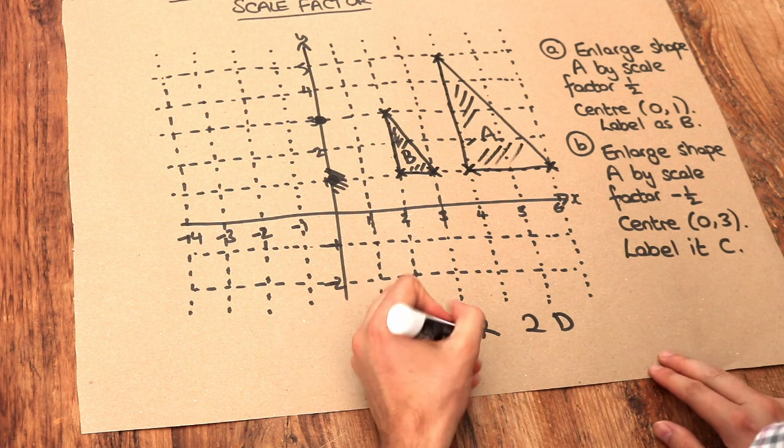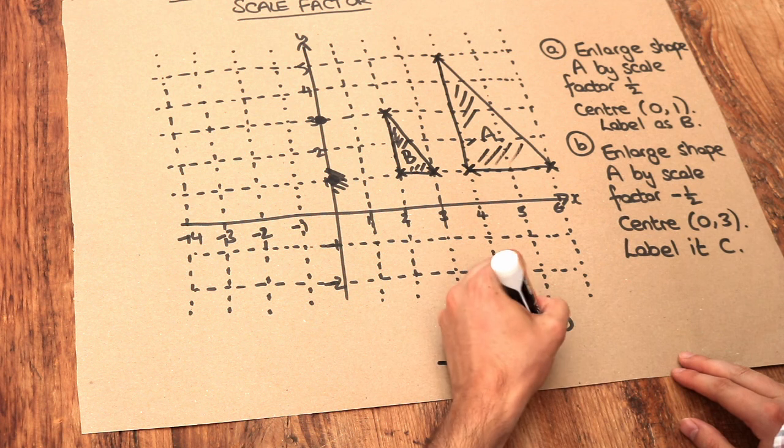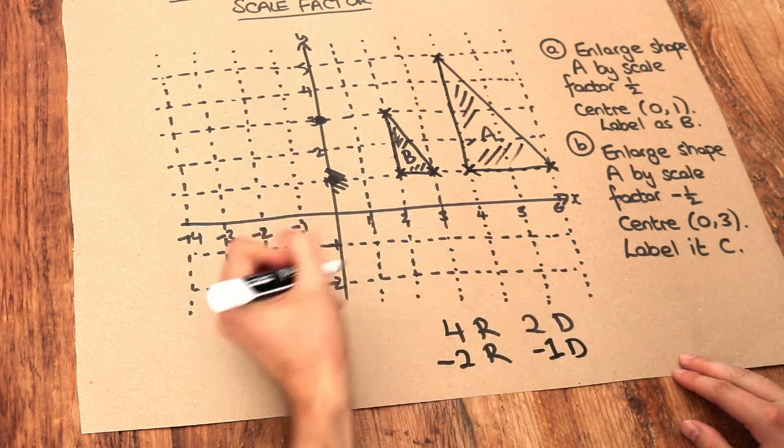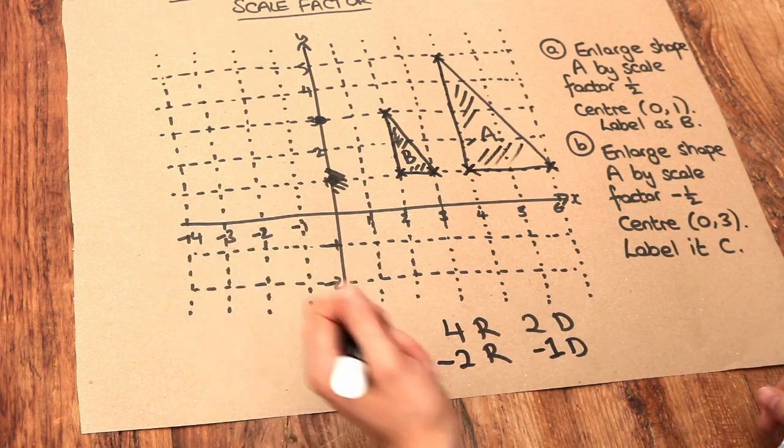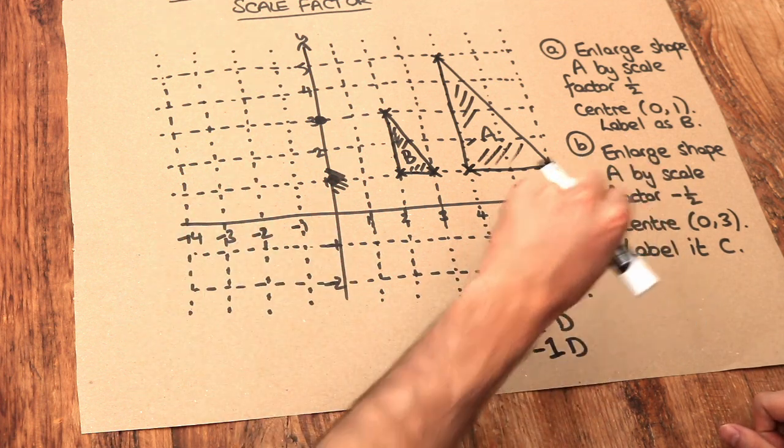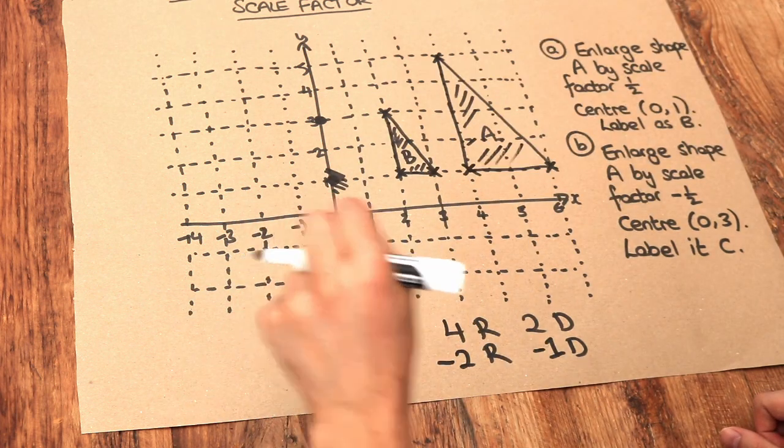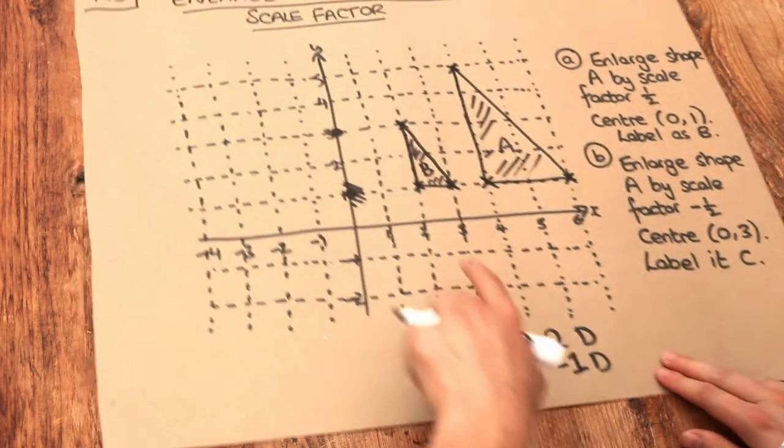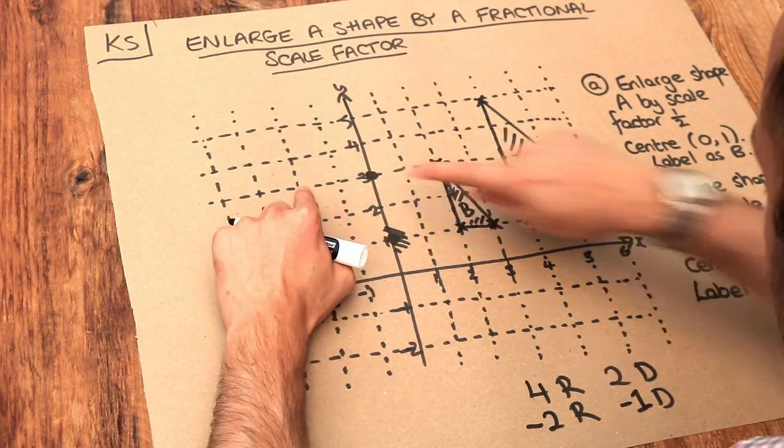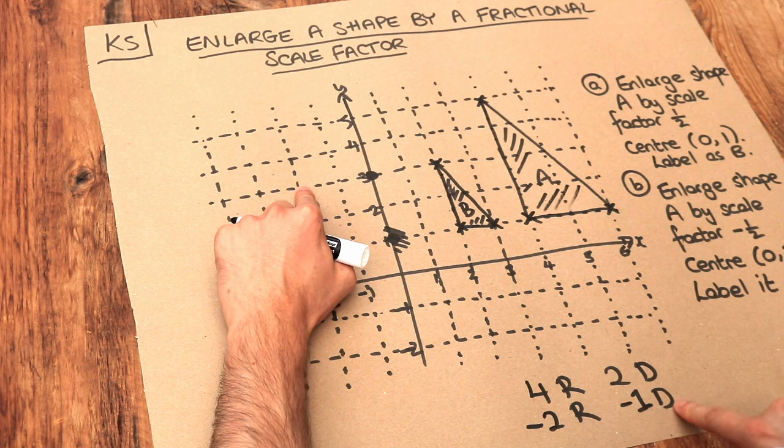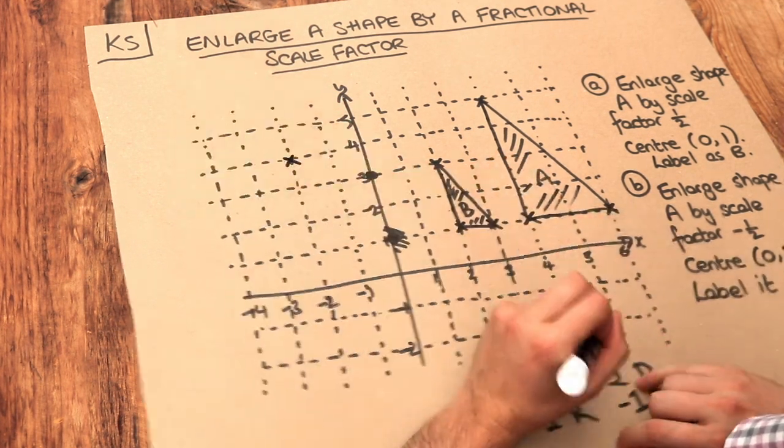Half of 4 is 2, so it's minus 2 right. And 2 times minus half is minus 1, so minus 1 down. What does minus 2 right mean? If you go minus 2 right, that's the opposite direction, so it's 2 left. Starting from the centre of enlargement, we go 2 left, and if it's minus 1 down, we go 1 up in the opposite direction, ending up here.